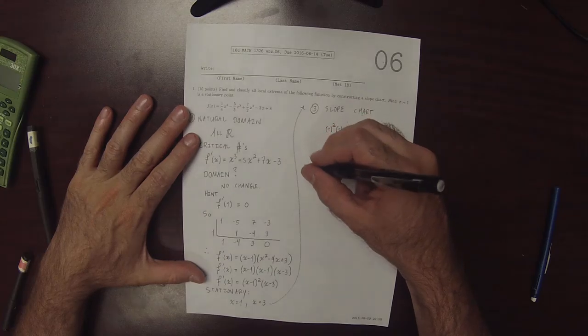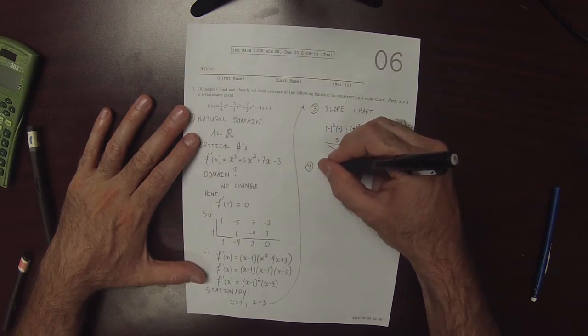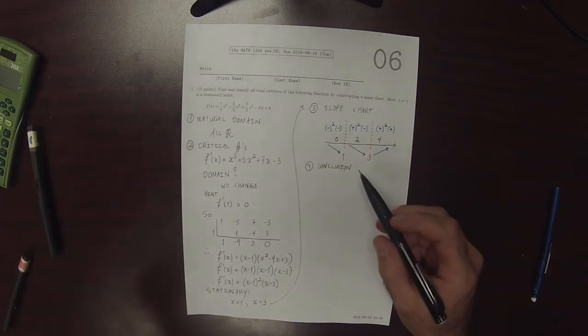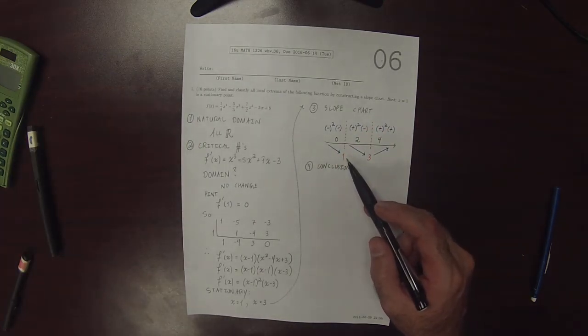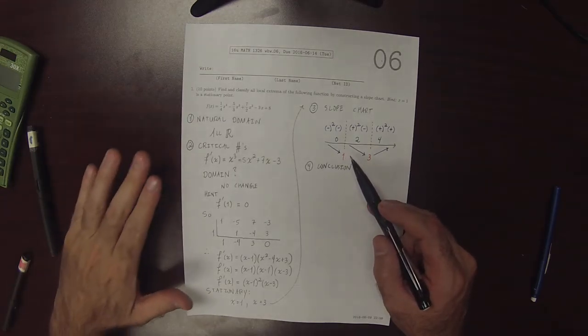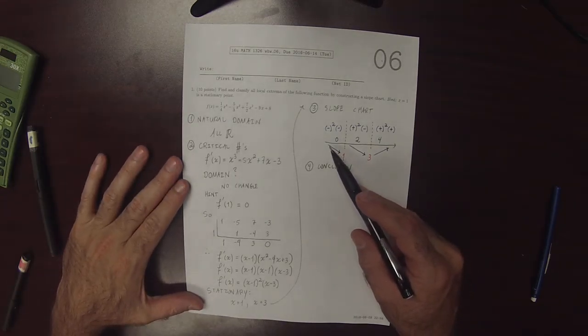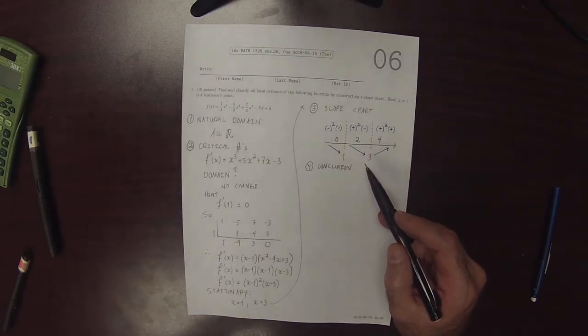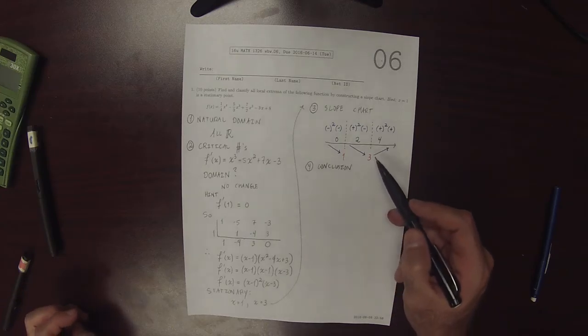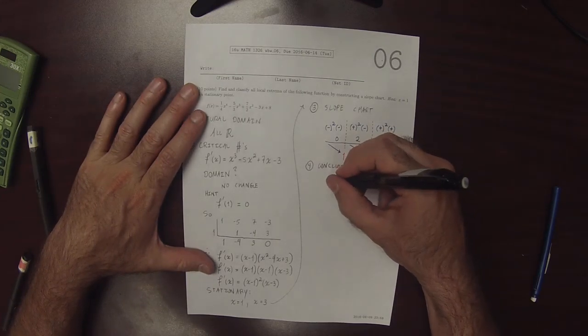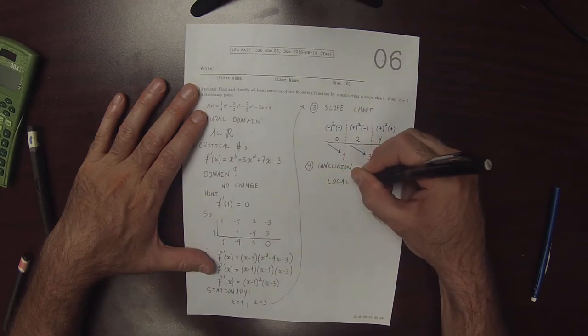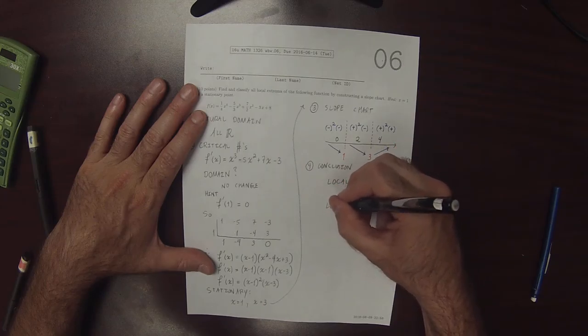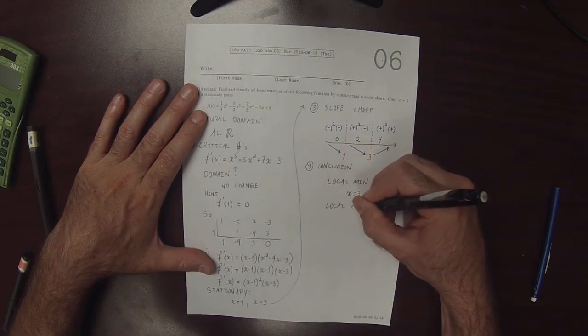So now we can make our conclusion. So 1 is not a local extremum, because the slope chart is saying that the function goes down and then continues to go down. So it is not a maximum, and it is not a minimum. However, 3 is a minimum. So local min, x = 3, and local max, none.